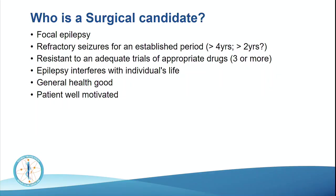Who is a surgical candidate? We are confining ourselves to focal epilepsy. They need to have refractory seizures for an established period — it is big surgery with a 1% risk of major complication. Traditionally we said four years, but more recently many feel that if patients are not responsive after two years they are destined to remain refractory and the earlier you operate the better. Once you've tried three drugs, the benefit for the fourth, fifth, or tenth drug becomes vanishingly small — so after three drugs, generally people are refractory.